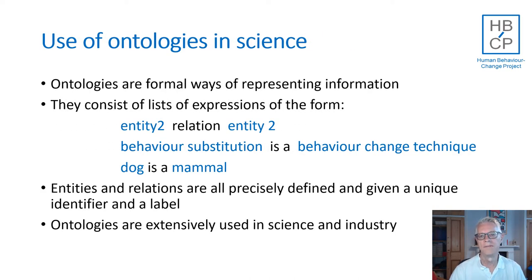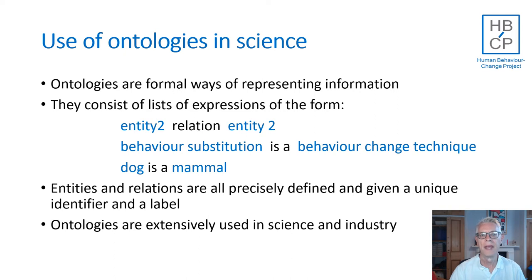Ontologies are formal ways of representing information that provide much of the expressiveness of natural language but with much greater precision. They can also be used by computers for search and inference. They consist of lists of expressions of the type entity one, relation, entity two — also sometimes called subject, predicate, object. Every entity and relation is precisely defined and given a unique identifier called an IRI, which stands for Internationalized Resource Identifier, and that allows it to be located on the World Wide Web, making it a powerful tool for storing knowledge and information.